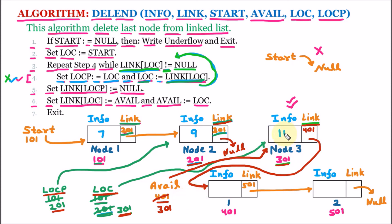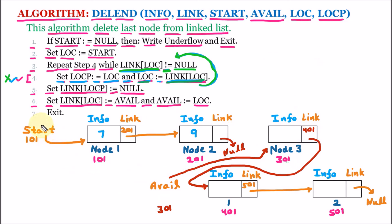When node 3 becomes part of the avail list, its value is lost because it is considered a free node. So node 3 is deleted from the linked list and added to the avail list. If we traverse the linked list, we go from start to node 1 (value 7), then to node 2 (value 9), and then to null, where the linked list is complete.